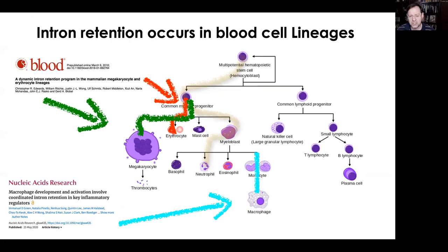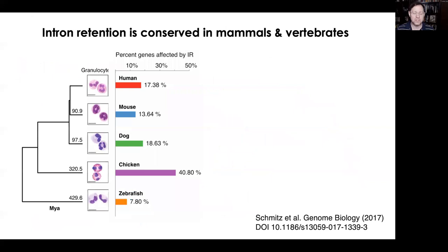We've established that intron retention is a fundamentally important mechanism involved in blood cell development. Some of the bioinformatic tools we used and developed — such as IRFinder and others available on our website — show that intron retention affects all different blood cell lineages. To explore whether it is a widely applicable mechanism during mammalian development, we obtained granulocytes from five different species: human, mouse, dog, chicken, and zebrafish. We performed very deep RNA-seq and bioinformatics analysis, demonstrating that the percentage of genes affected by intron retention varies between 7% in zebrafish and as high as 40% in chickens.